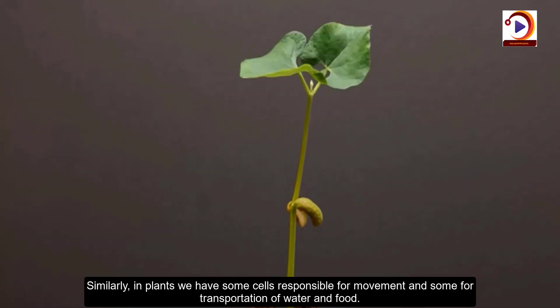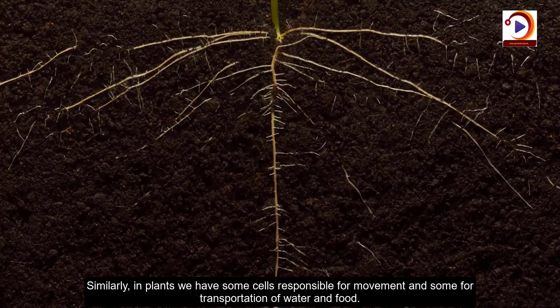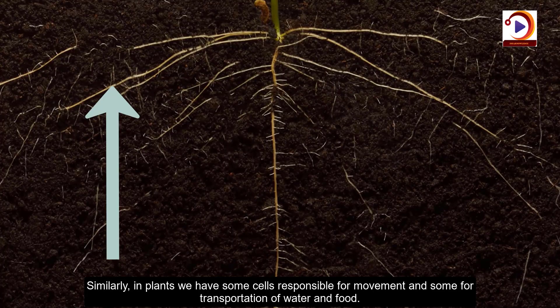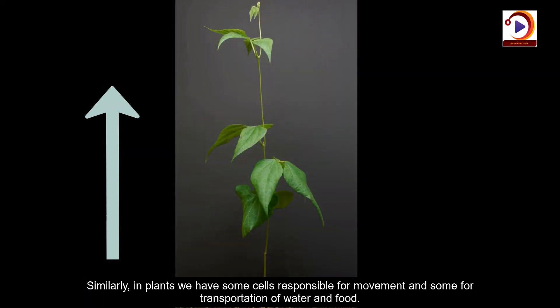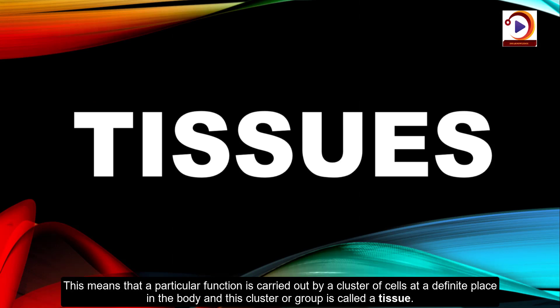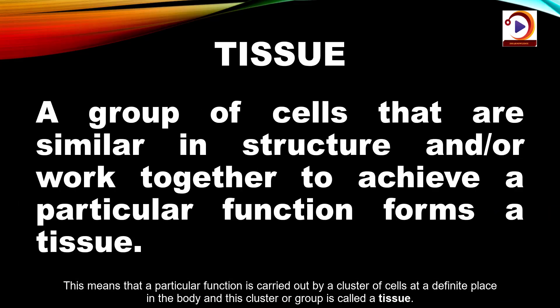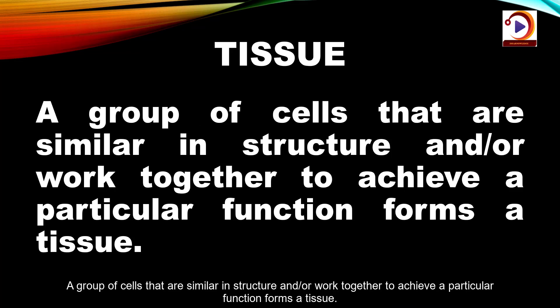Similarly, in plants we have some cells responsible for movement and some for transportation of water and food. On the basis of these functions, they are divided. A particular function is carried out by a cluster of cells at a different place in the body, and this cluster or group is called a tissue — a group of cells that are similar in structure or work together to achieve a particular function.